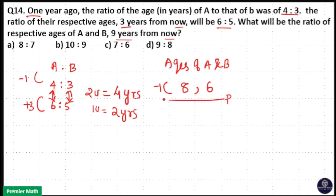So if this is present, after 3 years from present, the ages of A and B will be 6 into 2, 12 years, 5 into 2, 10 years. So this is 12 and 10.